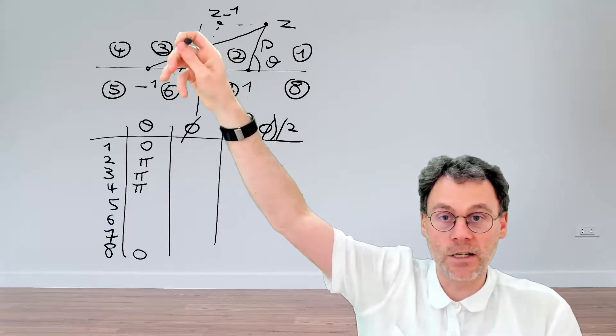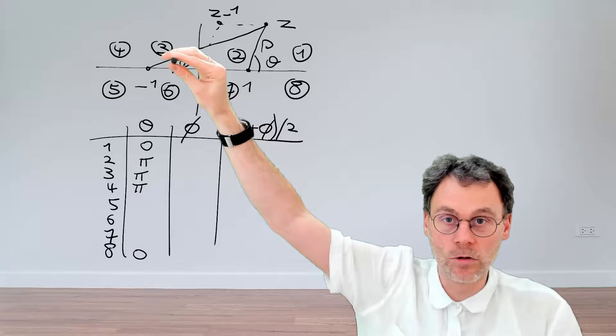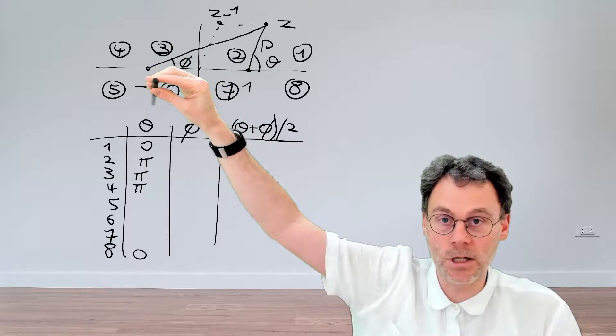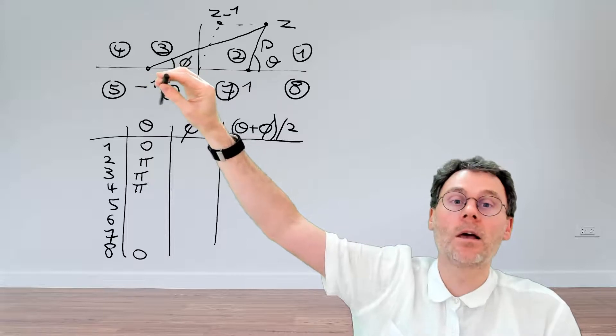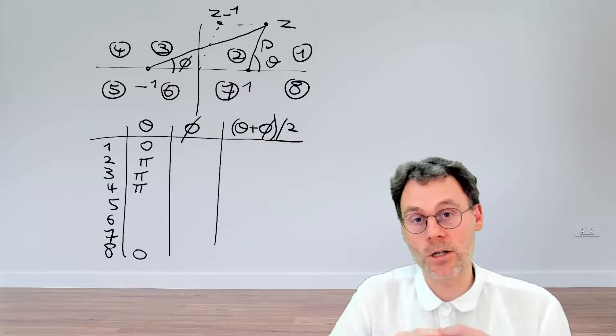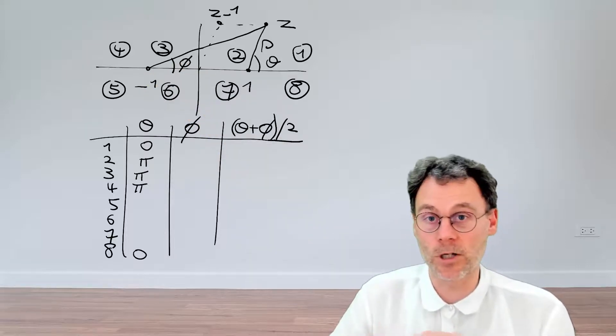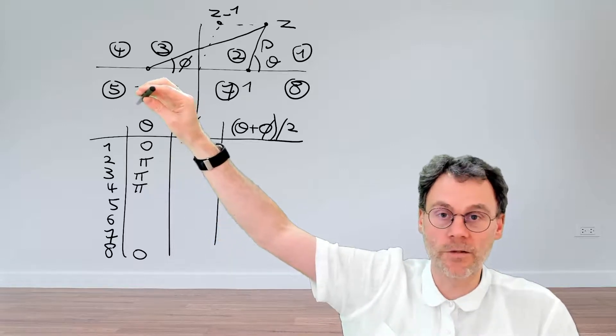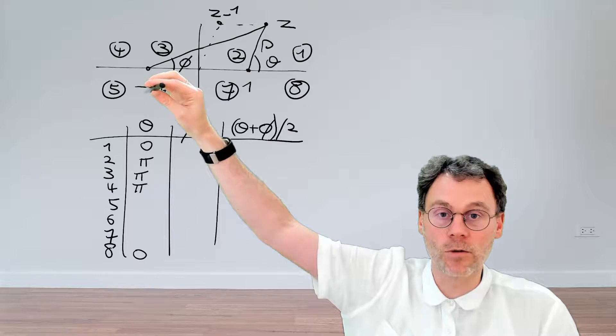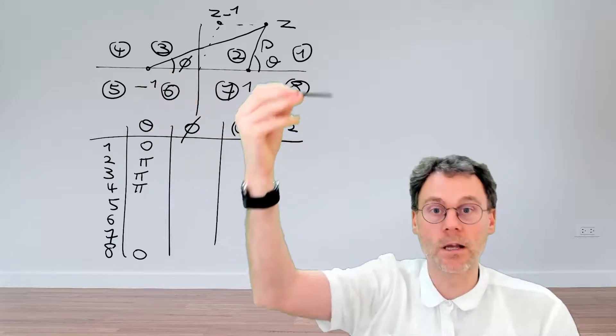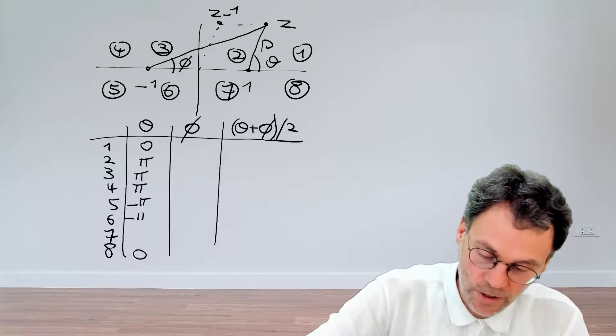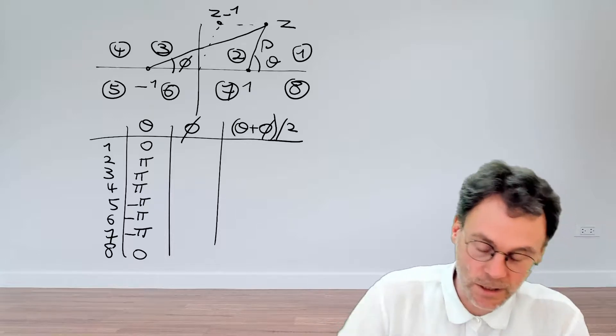Then for 5, 6 and 7, what you shouldn't do is say, okay, this is just keep on pushing and then going to an angle which is slightly above pi because that will bring us outside of the interval minus pi to plus pi. Rather, what you should do for the points 5, 6 and 7 is say that they have an argument of minus pi, which will then keep on increasing and you rotate like this over 5, 6 and 7. We have an argument of minus pi.